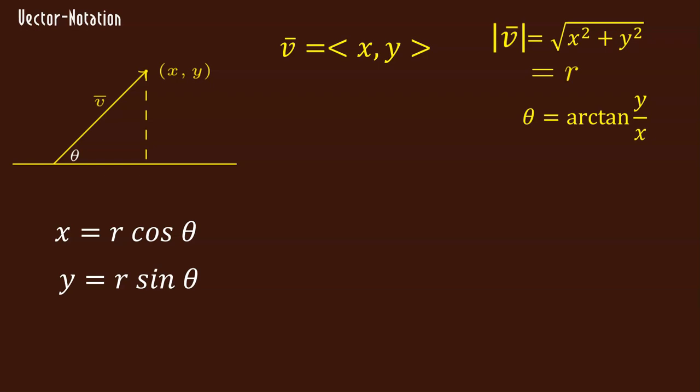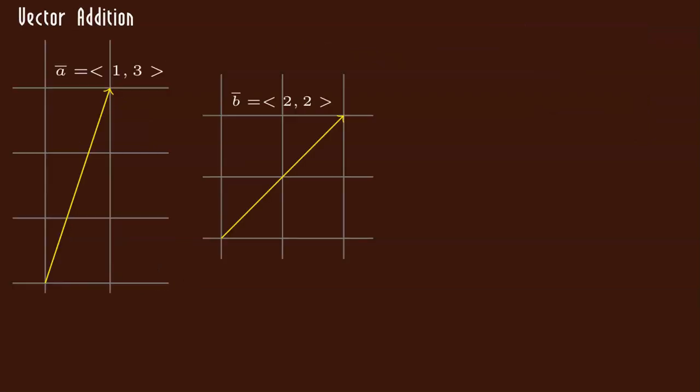So what can we do with our vectors? Well, we can add them. Suppose we have two vectors. A is 1, 3, and B is 2, 2. To add vectors, you add them component-wise. The first component's together, the second component's together. So A plus B will be 3, 5.